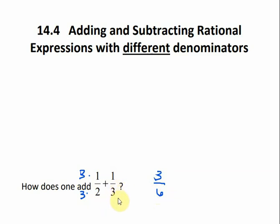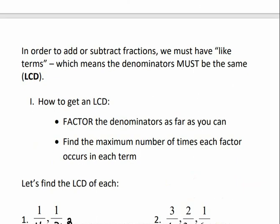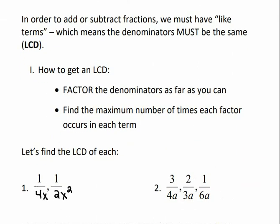Now we need to do the same thing to the 1/3. What do we need to multiply 3 by to get 6? It would be 2. And we need to do the same thing to the numerator. So that would give me 2 over 6. Now, once we have a common denominator, that's going to be the denominator in my answer. And then we just add or subtract the numerators. 3 plus 2 is 5. And of course, if it were not reduced, we would need to reduce it. So in order to add or subtract fractions, we have to have like terms, which means the denominators must be the same — or we have to have an LCD.